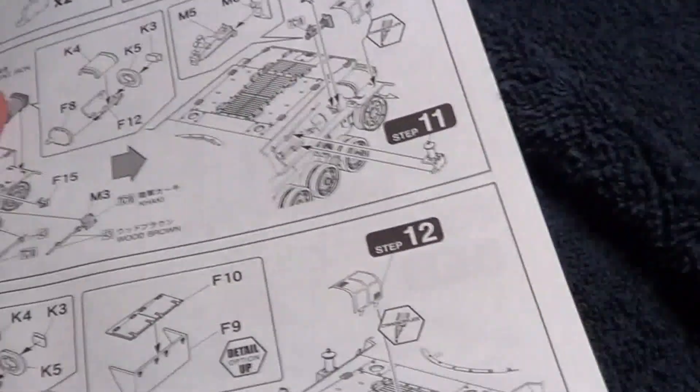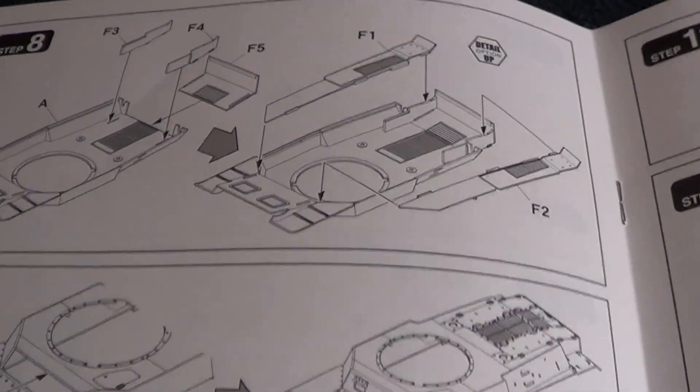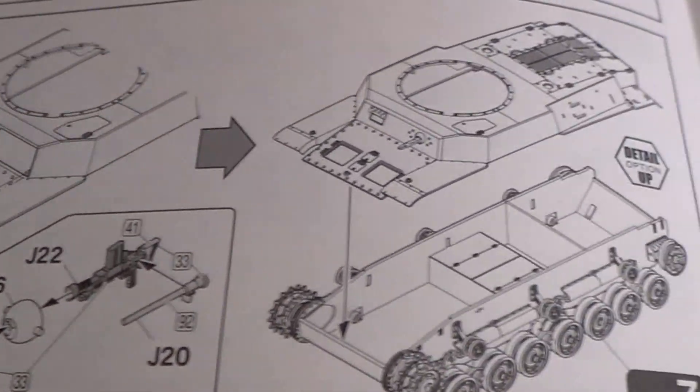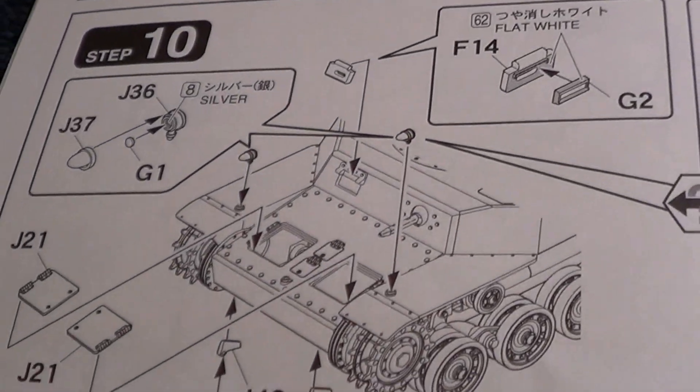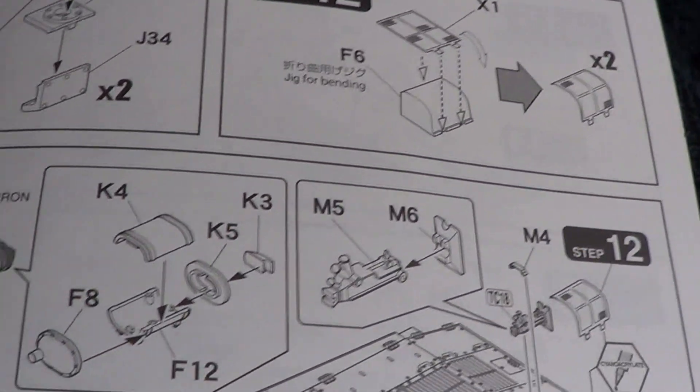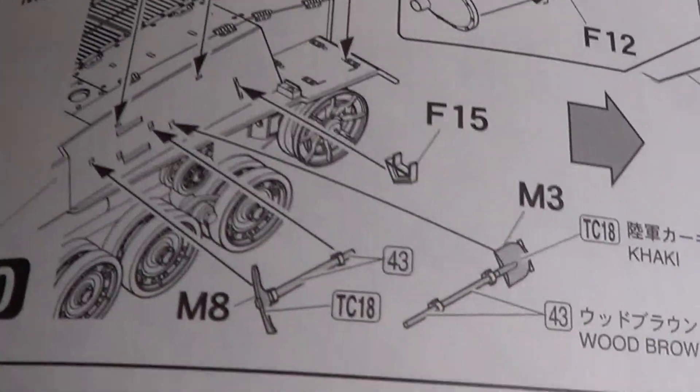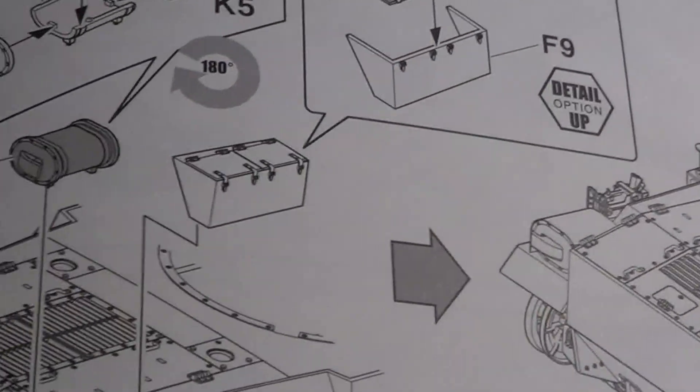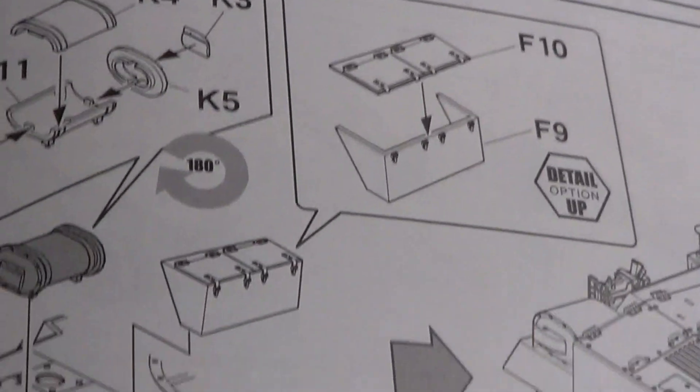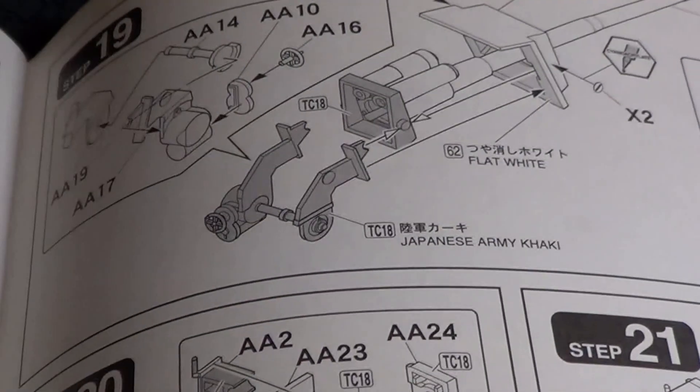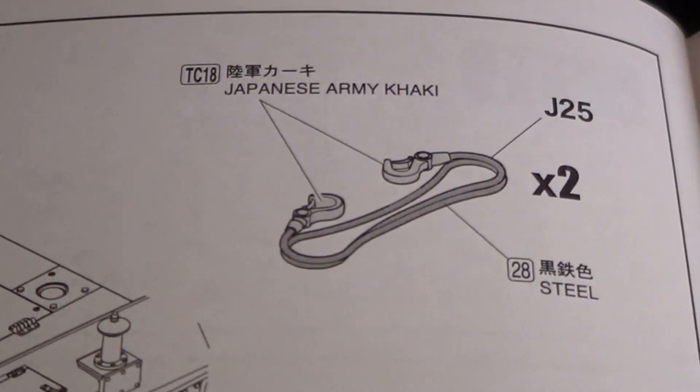This tank would have easily taken on a panther, maybe even a tiger, but that wasn't its intended enemy. Its intended enemy were the U.S. Shermans that were landing every which way in the South Pacific. And this tank would have had its way with Shermans, that's for sure. The Type 89 that I reviewed earlier did include a small Photo Etch sheet. I think they only did that because it was in that Girls on the Panzer universe.